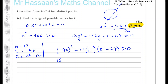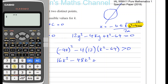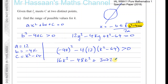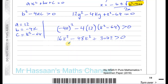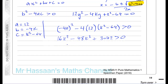Expanding: 16k² − 48(k² − 64) > 0, which gives 16k² − 48k² + 48·64 > 0. Now 48 × 64 = 3072, so we have 16k² − 48k² + 3072 > 0, which simplifies to −32k² + 3072 > 0.